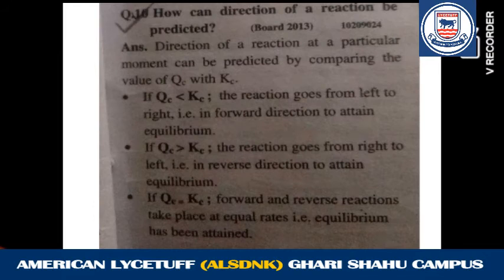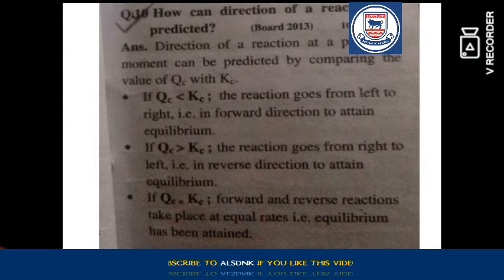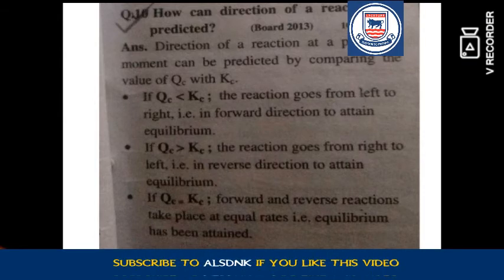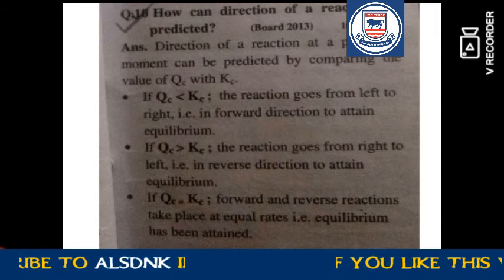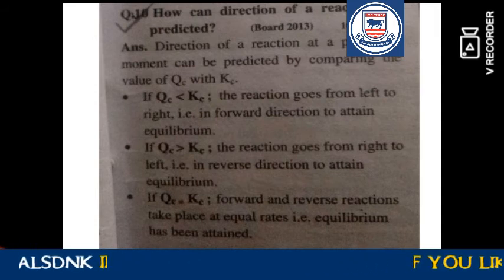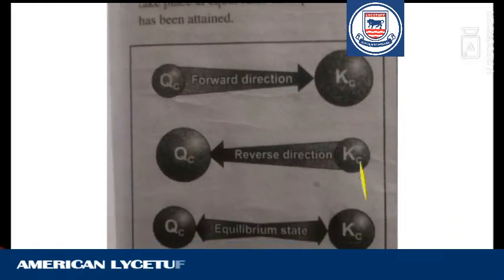Your next question is: how can the direction of a reaction be predicted? As studied in lecture 5, if QC is less than KC the reaction will proceed in the forward direction; if QC is greater than KC the reaction will be reversed; and when QC equals KC the reaction has attained equilibrium.